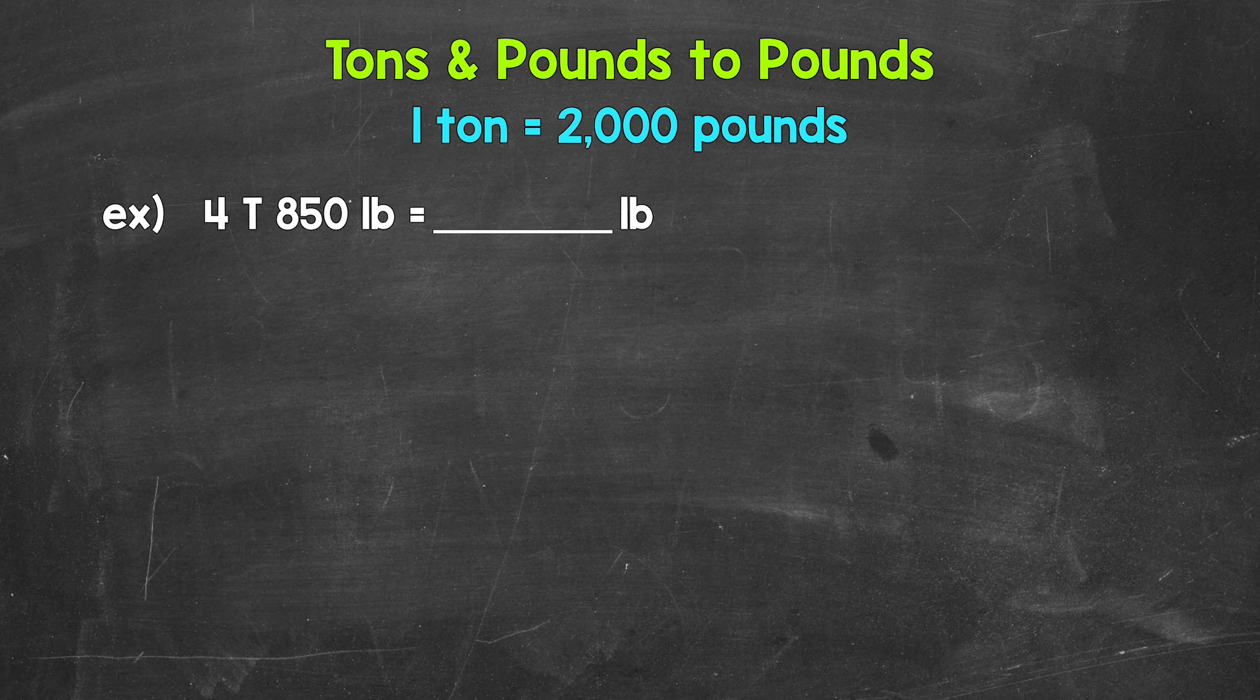Let's jump into our example where we have 4 tons 850 pounds. In order to convert this to pounds, all we need to do is convert 4 tons to pounds and then add the 850 pounds to whatever we get for that.